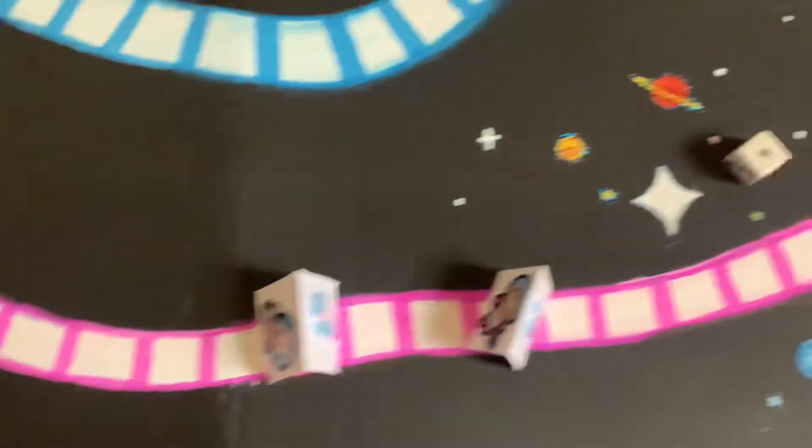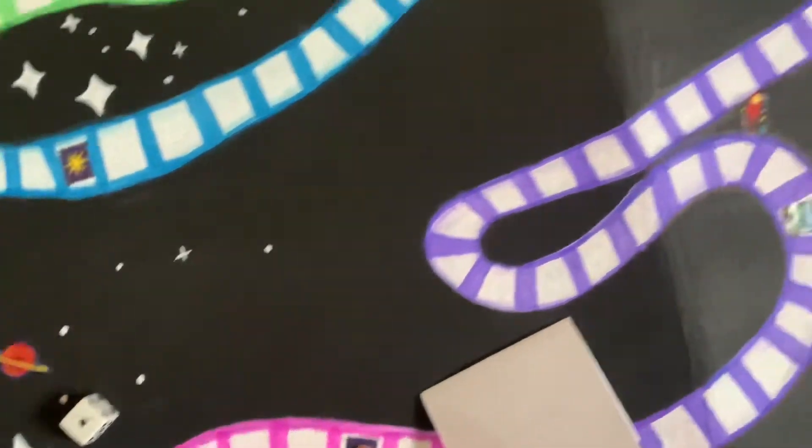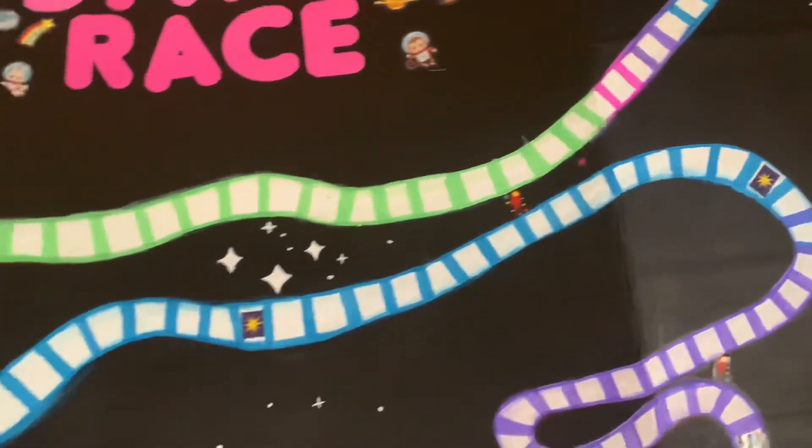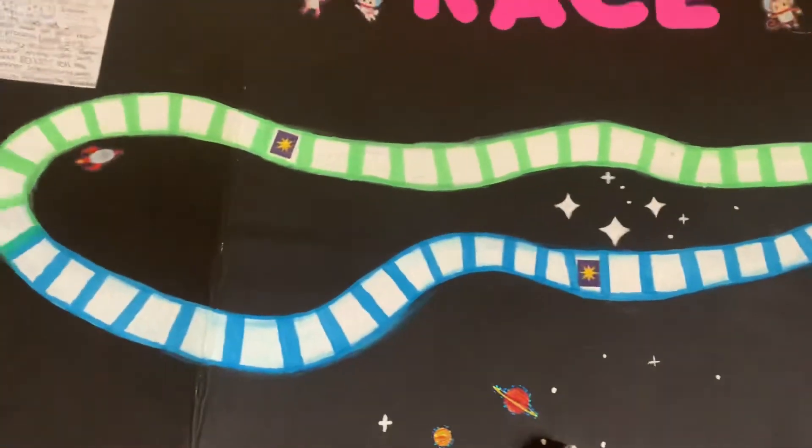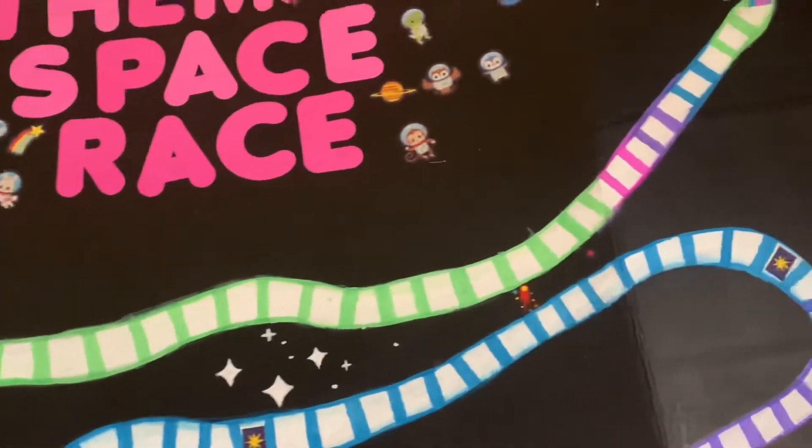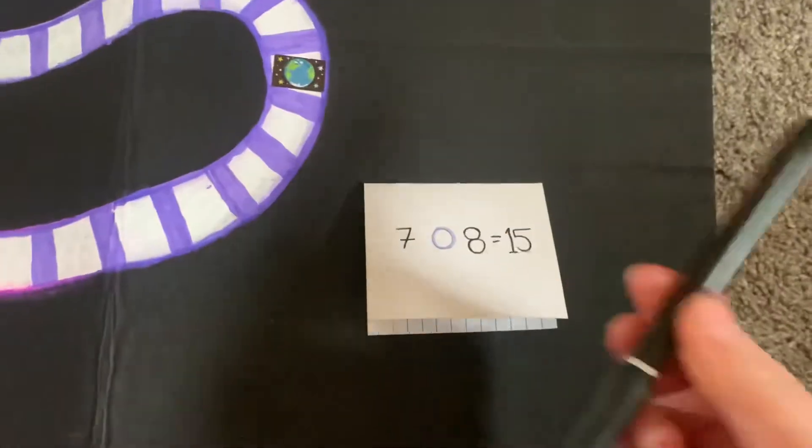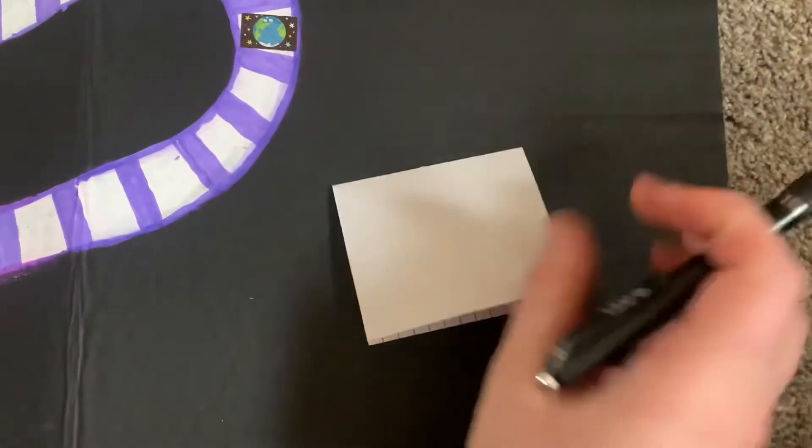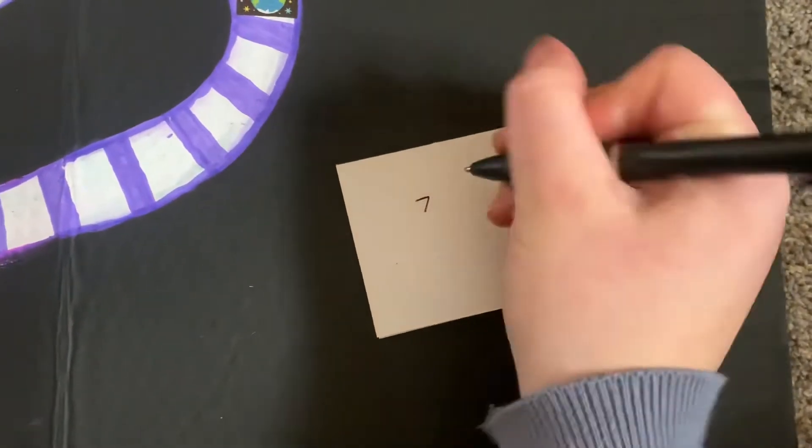There are some very important things to note in this game. As you can see, there are four stars and two earths on the map. If you land on one of these spaces, you get to roll again without having to solve a problem. So it's just like a freebie. It's also recommended for each player to have a pen or a pencil to solve each problem.